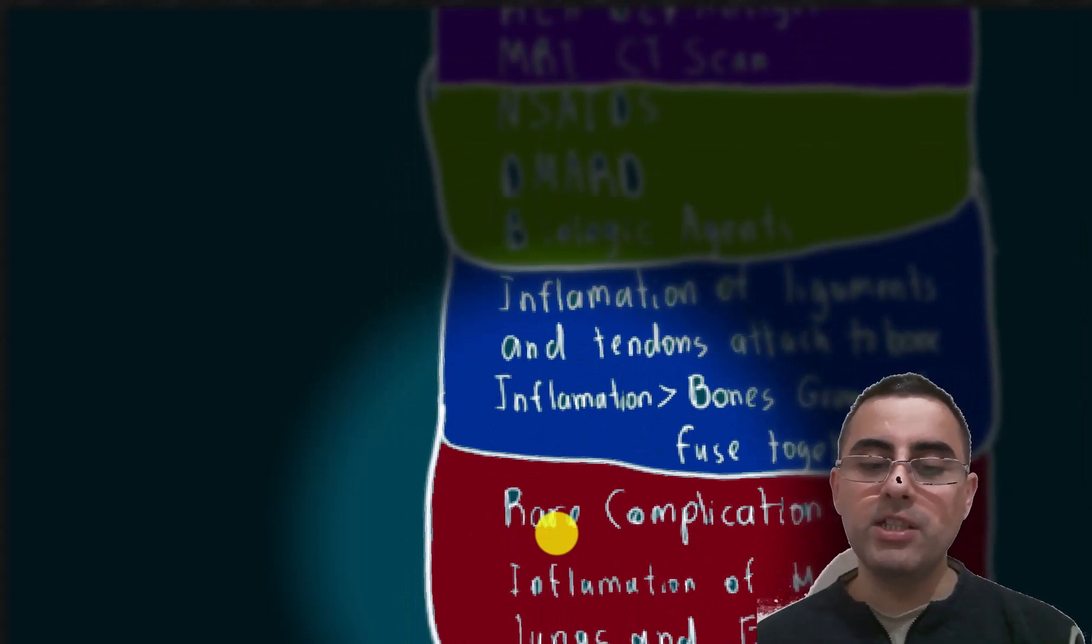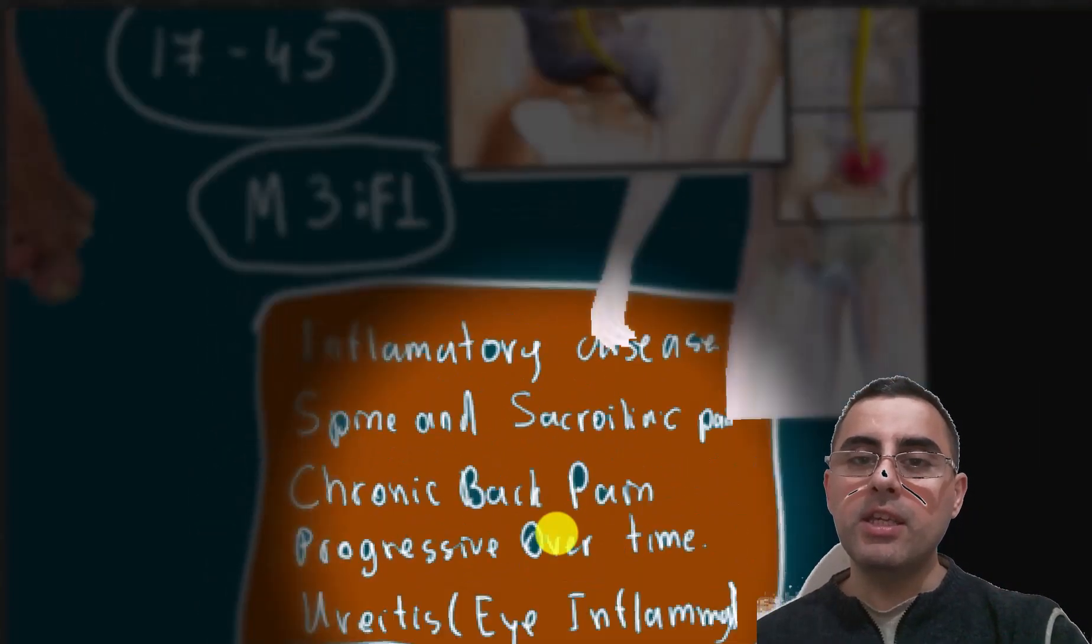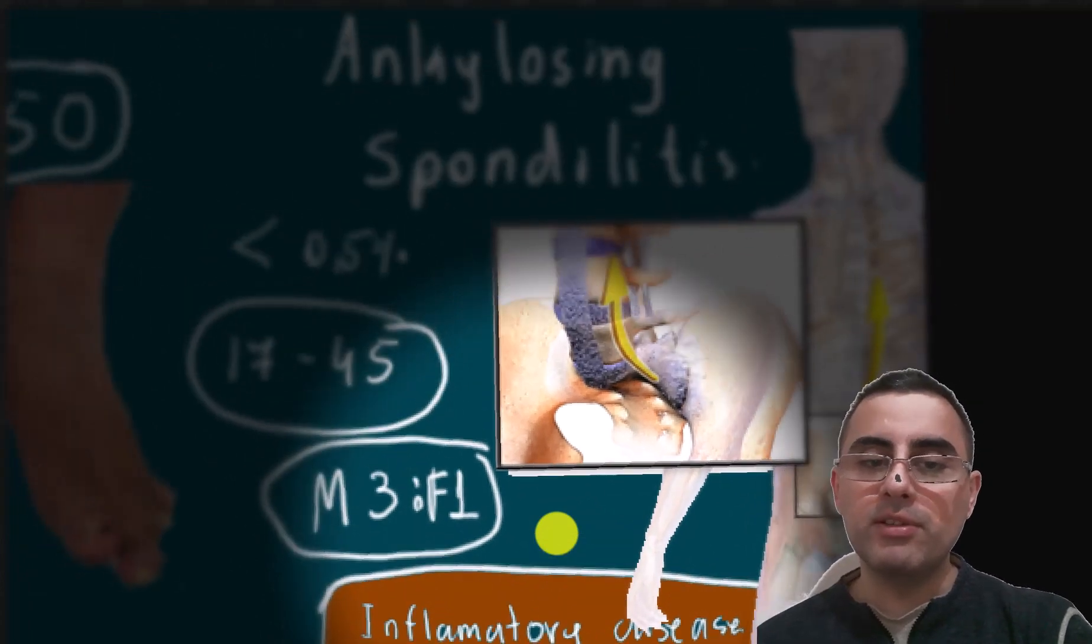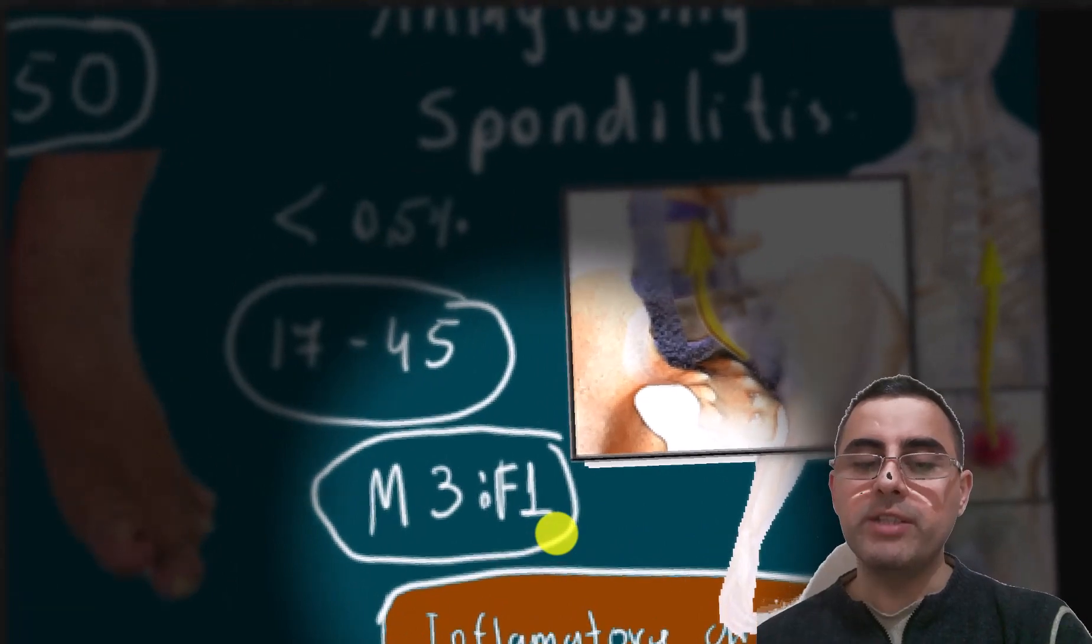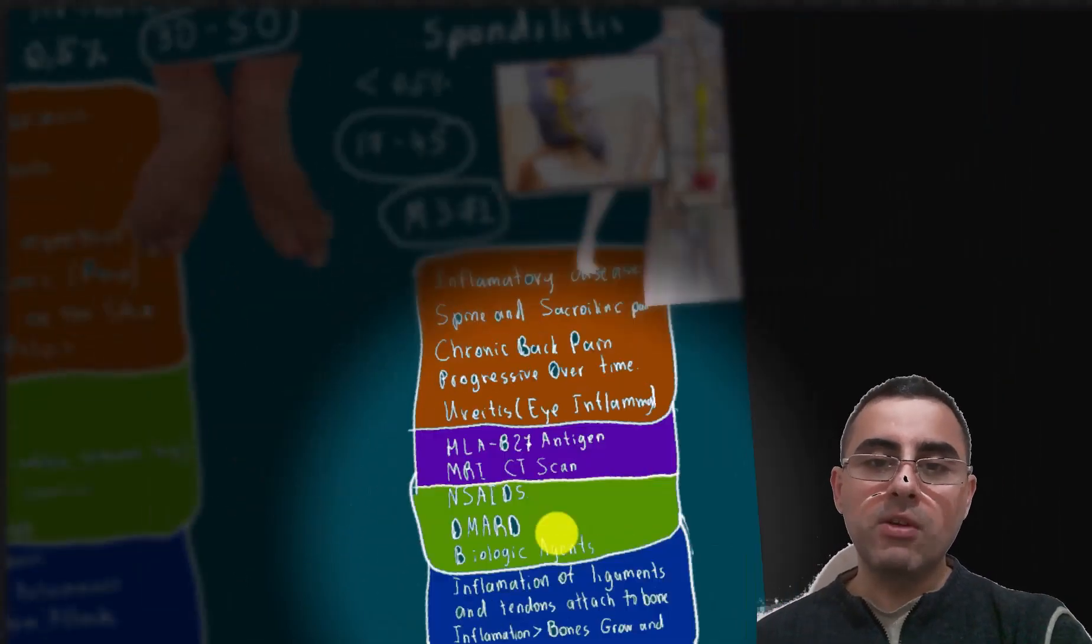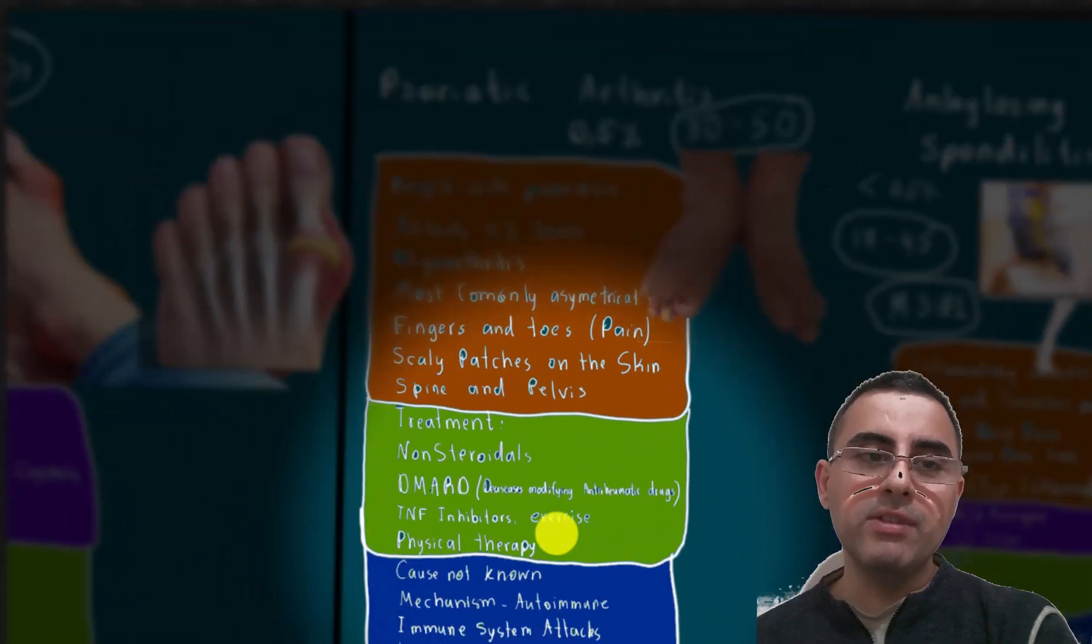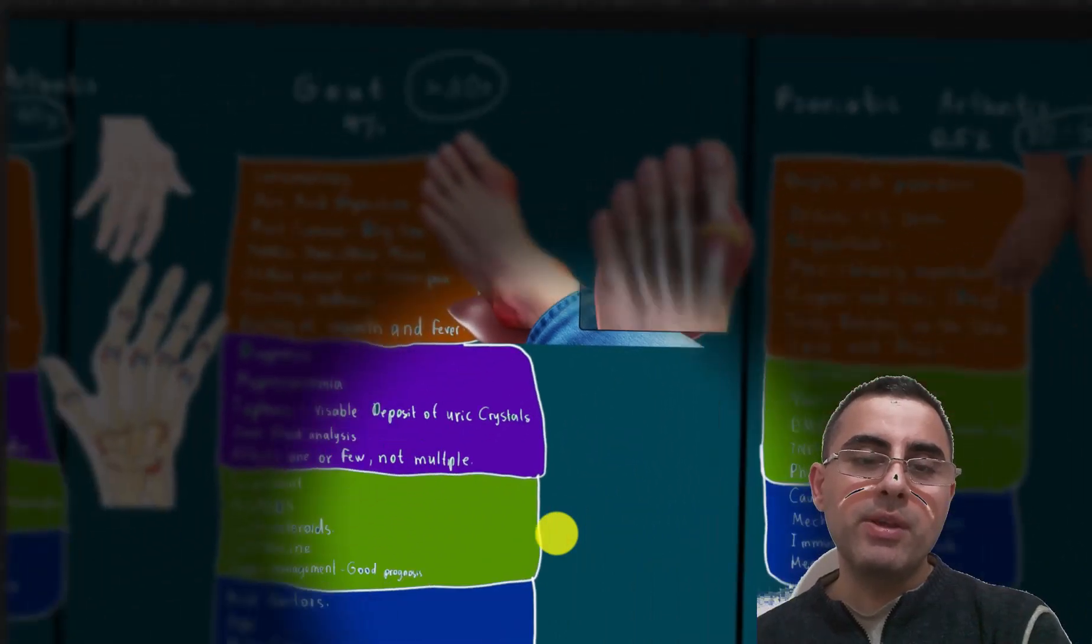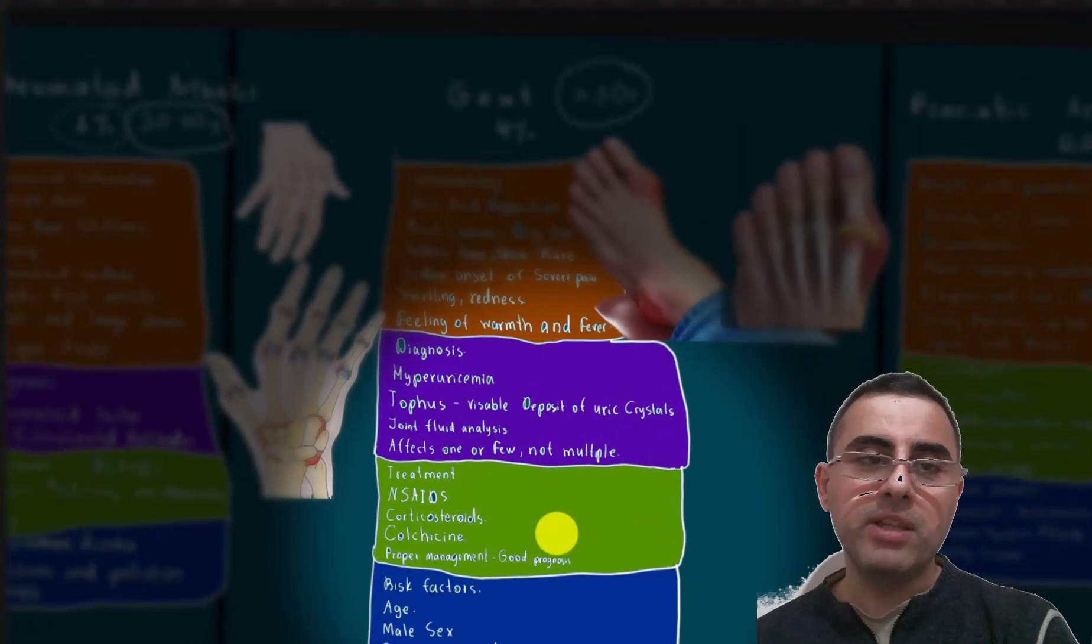It can cause serious disability to patients and it also has rare complications which can cause inflammation of the heart, lungs, and eyes. If not properly managed, it can affect a person's lifespan significantly, so it needs attention. That's all for today. There are other diseases which can cause joint pains, but we already talked about the most common and most important ones.